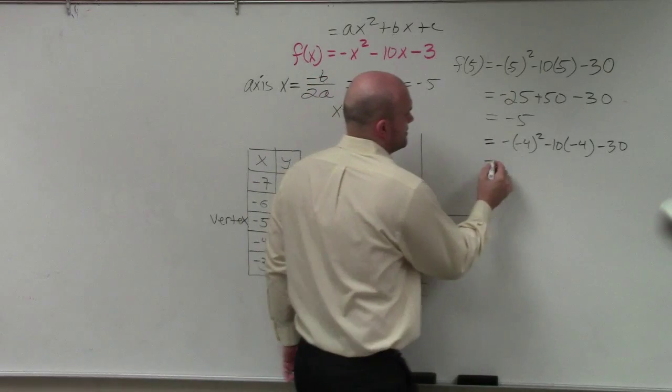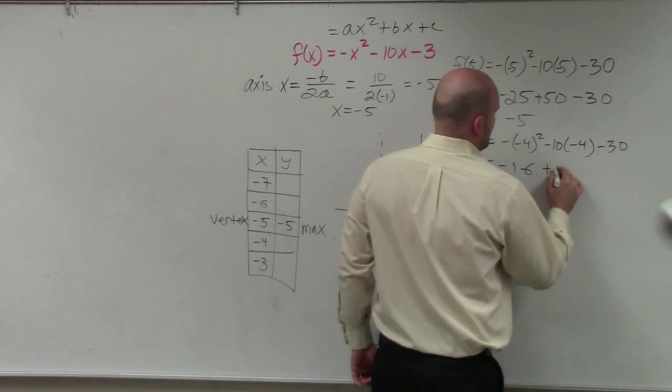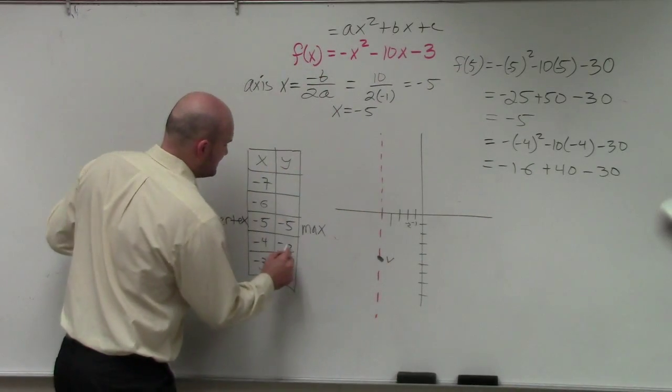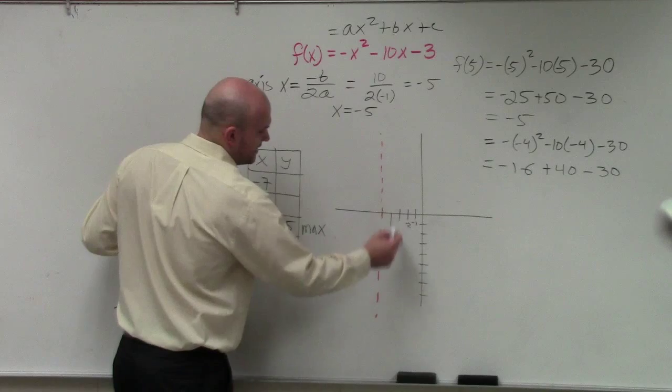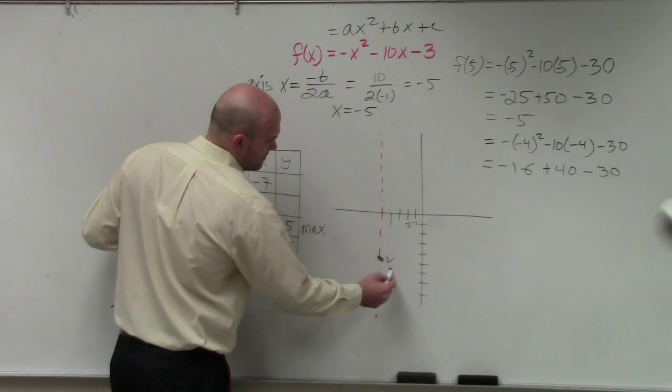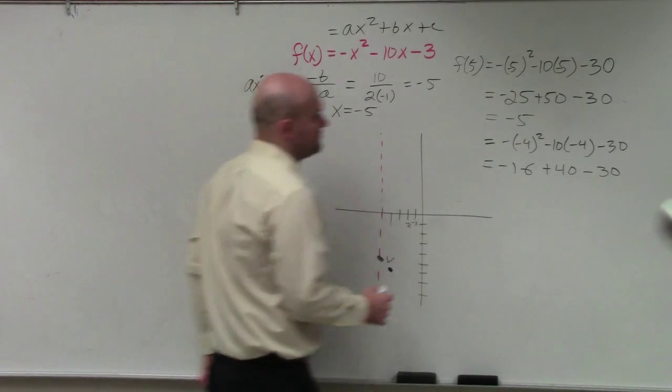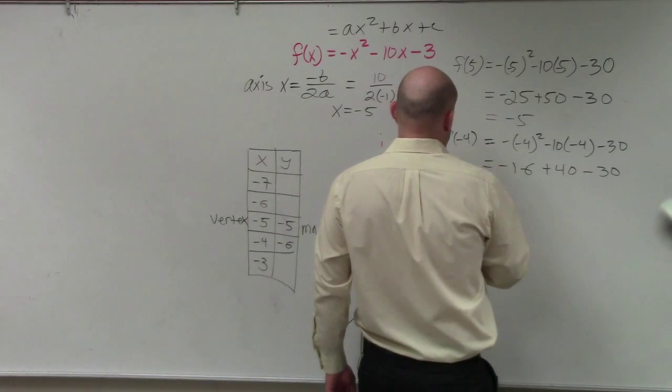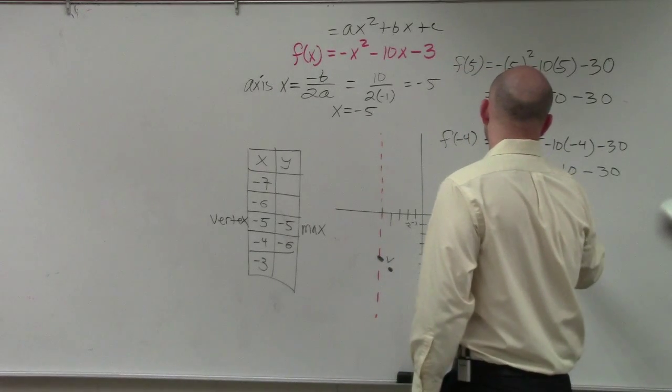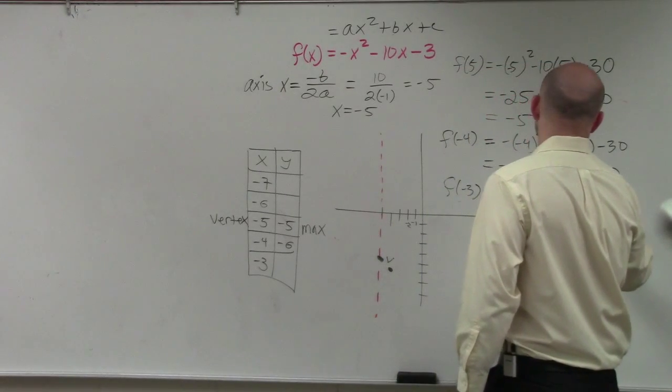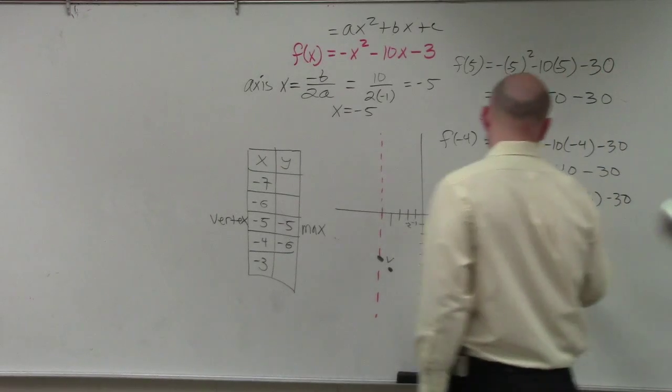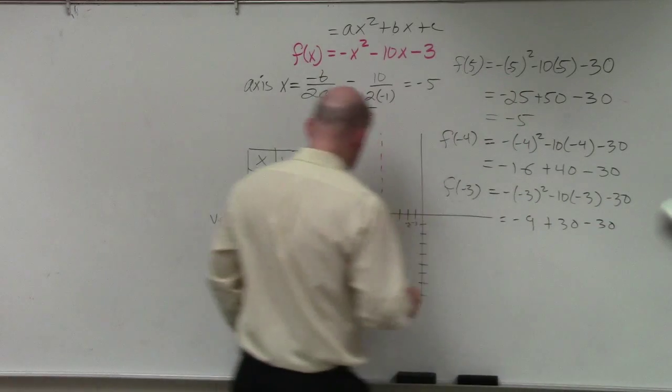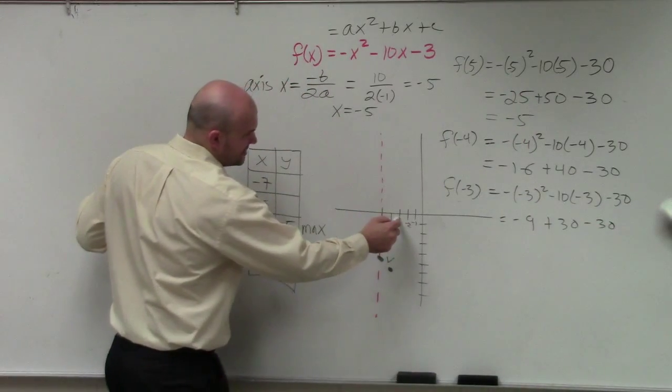So let's just do negative 4. Negative 4, I get negative 16 plus 40 minus 30. So that gives me a negative 6. So I go negative 4. Now I'm going to go down to negative 6. And then let's do negative 3. So I have negative 3 squared minus 10 times negative 3 minus 30. That equals negative 9 plus 30 minus 30. So at negative 3, I go down to negative 9. 1, 2, 3, 4, 5, 6, 7, 8, 9.